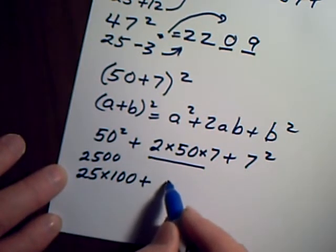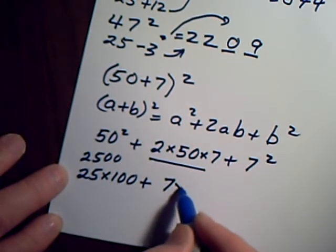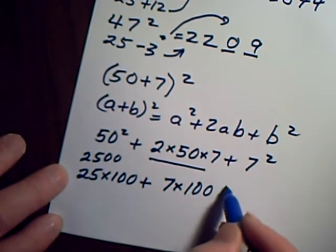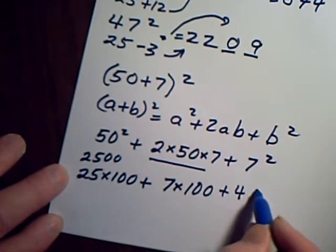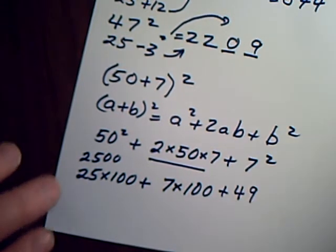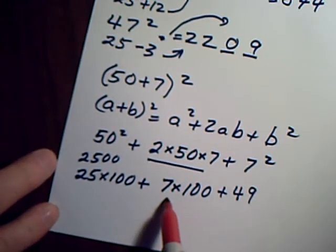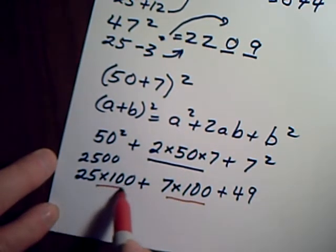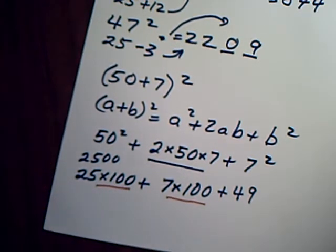This is 100 × 7 which I'll write as 7 × 100, and then I have my 49, the 7 squared. Now if you look at this, there is a 100 there and a 100 there that I can factor out.